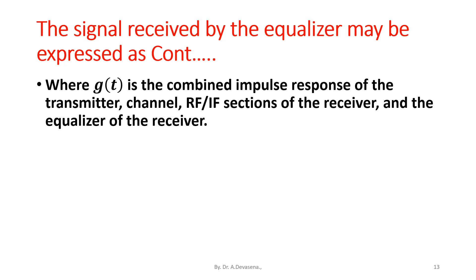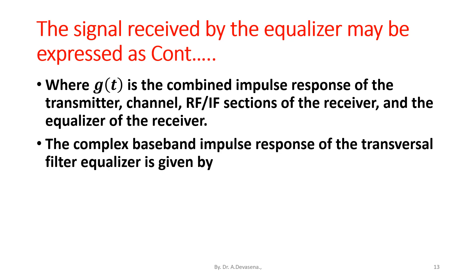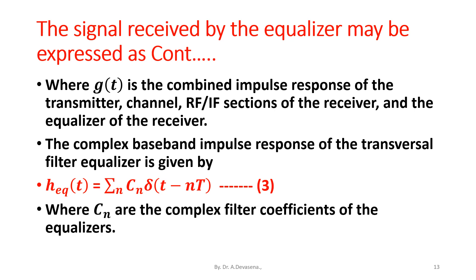The complex baseband impulse response of the transversal filter equalizer is given by h_eq(t) = summation N c_n δ(t - nT). Consider this is equation 3 where c_n are the complex filter coefficients of the equalizers.